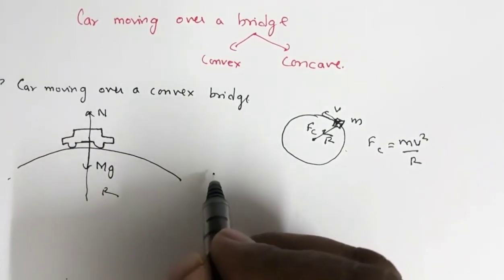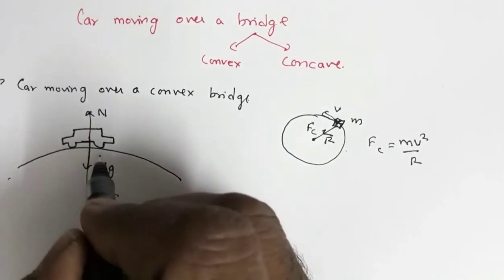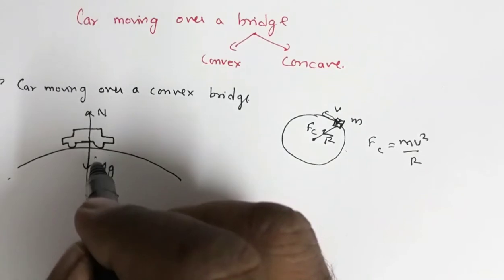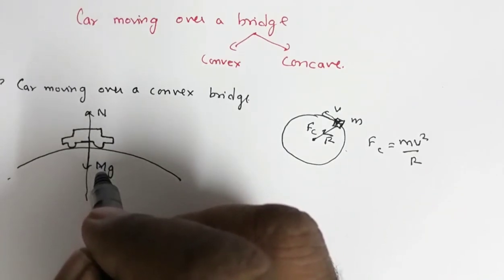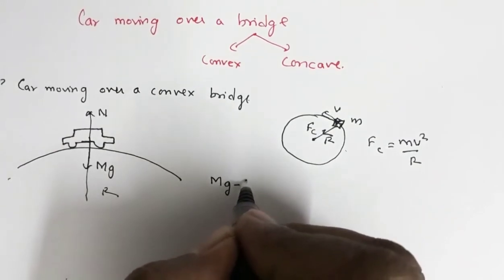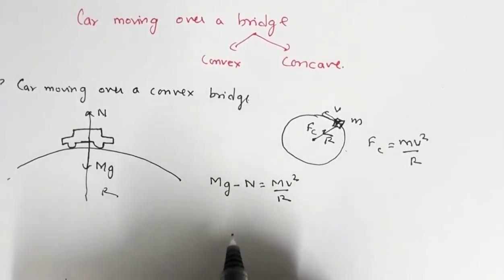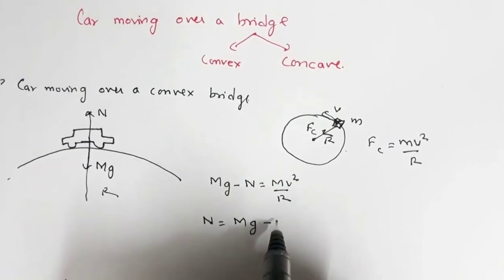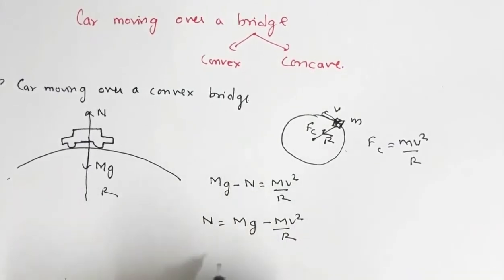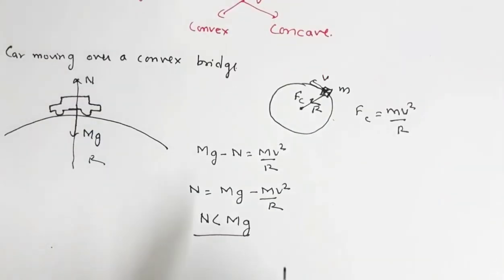The normal reaction acts upward, mg acts downward, and the net force is in the downward direction. So we have: mg − N = mv²/r, which gives N = mg − mv²/r.